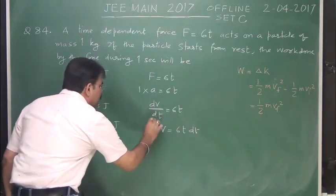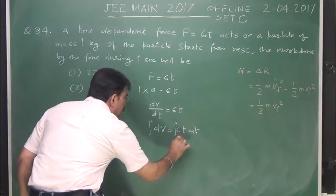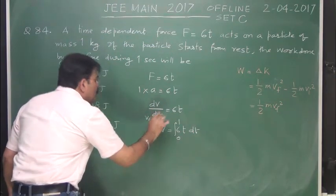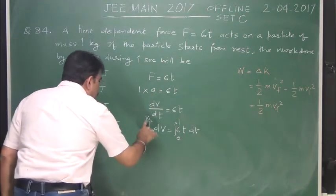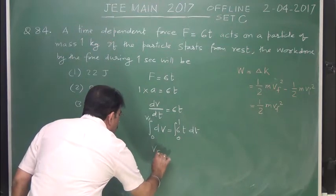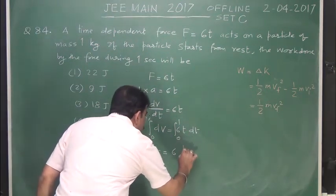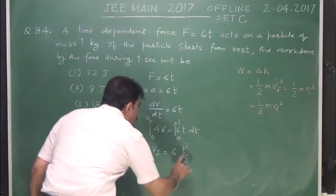And now integrate kare dayta hai, yahaan per time key limits 0 to 1, or yahaan 0 se vf, yahaan vf keh diya hai. Yahaan kya hooga, to yahaan to vf a gaya, is equals to 6 bahar, yya hooga, t square by 2, or limits put kareng hai.